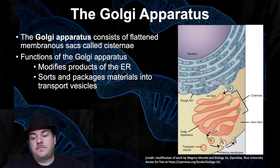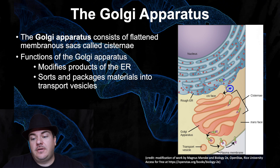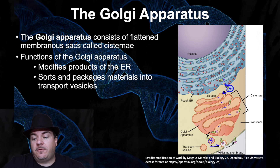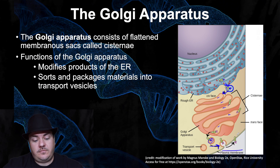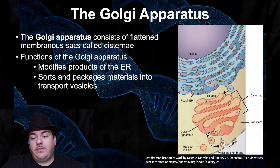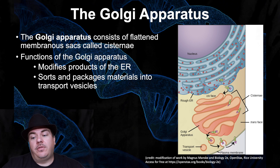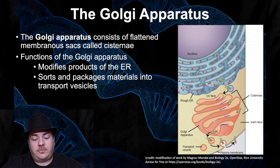As you can see in this figure, the rough ER is building proteins, putting them into a transport vesicle, which goes to the Golgi apparatus. Those proteins move through the Golgi apparatus, and after they've been modified and sorted, they're put into another transport vesicle and sent wherever they need to go. The Golgi has two different sides: one side facing the rough ER is called the cis face, and the other side facing the plasma membrane is called the trans face. Proteins move from cis to medial to trans, then are sent wherever they need to go.